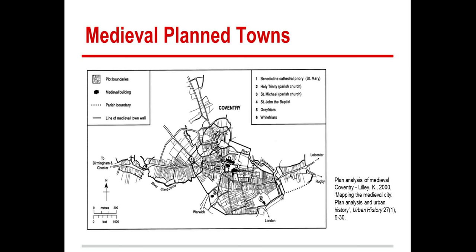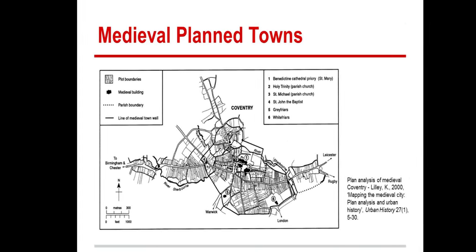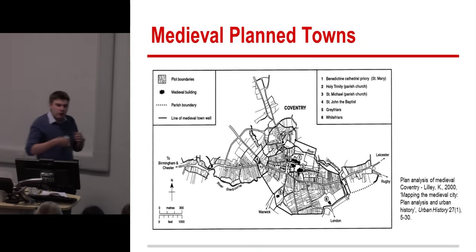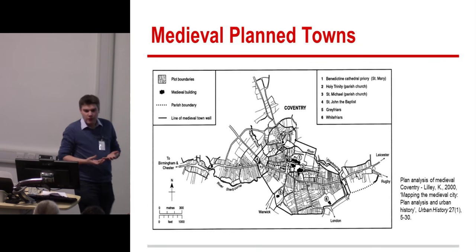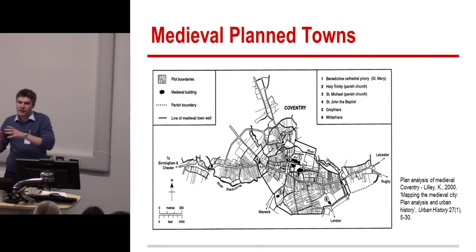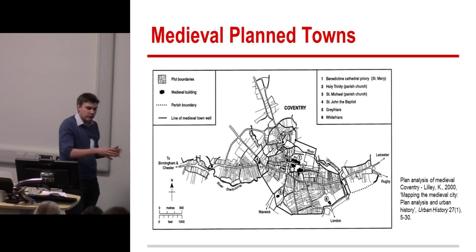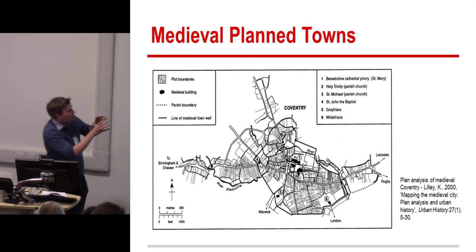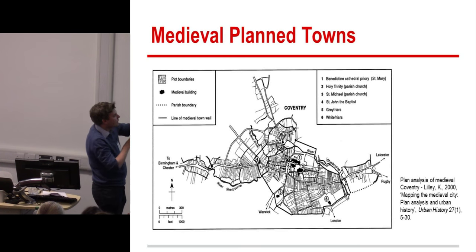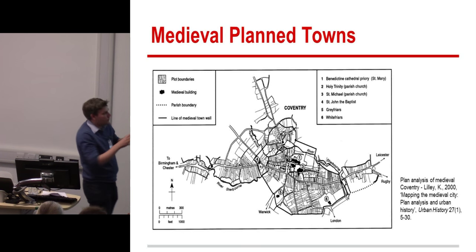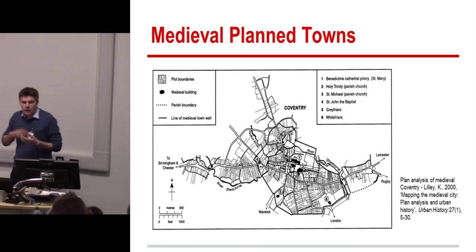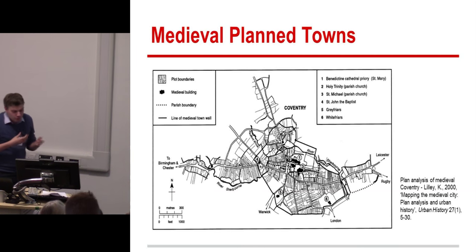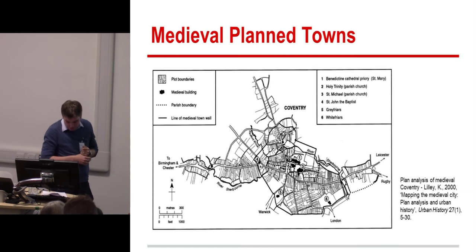Plan analysis has allowed scholars to move from creating static typologies of urban spaces—places laid out on a grid or places laid out to the ribbon settlement—to look at how places develop over time by identifying different plan units and how they relate to each other. For example, it allows us to see earlier features in the landscape being fossilized within the urban landscape.